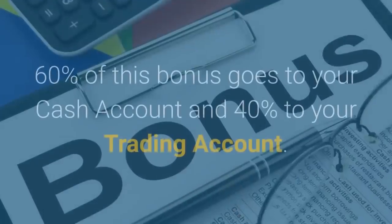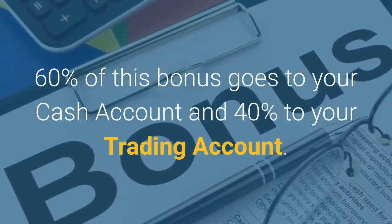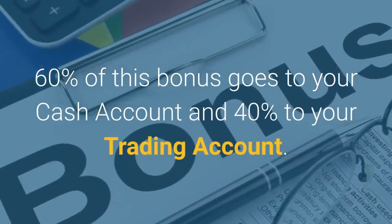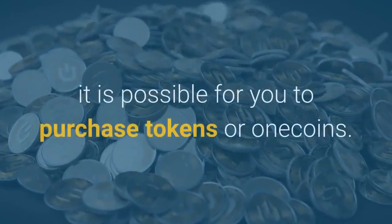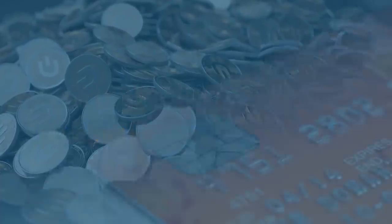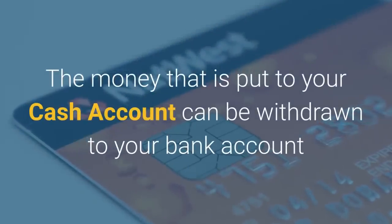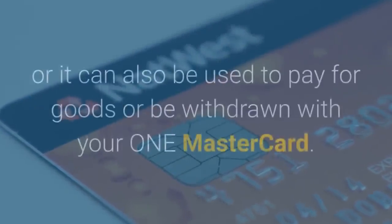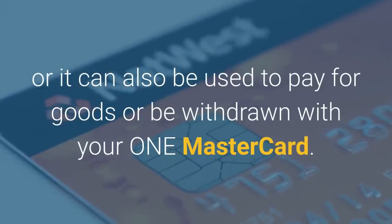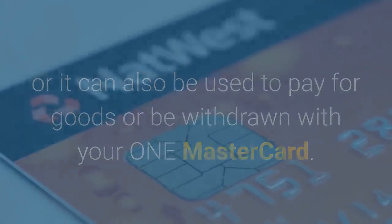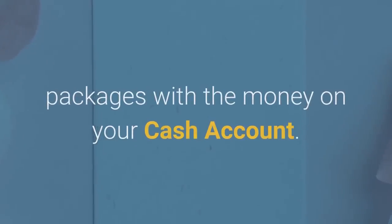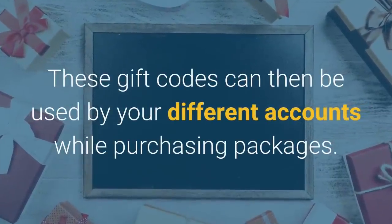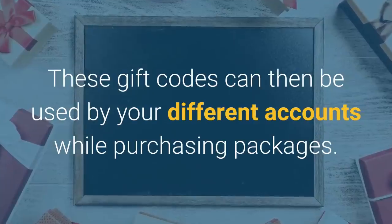OneCoin's cash account comes into play when you start to get bonuses from the investments made by the people under you. 60% of this bonus goes to your cash account and 40% to your trading account. With the sum in your trading account, it is possible to purchase tokens or OneCoins. The money in your cash account can be withdrawn to your bank account, used to pay for goods, or withdrawn with your OneMastercard. Within seconds, it is also possible to create gift codes for different packages with the money in your cash account.